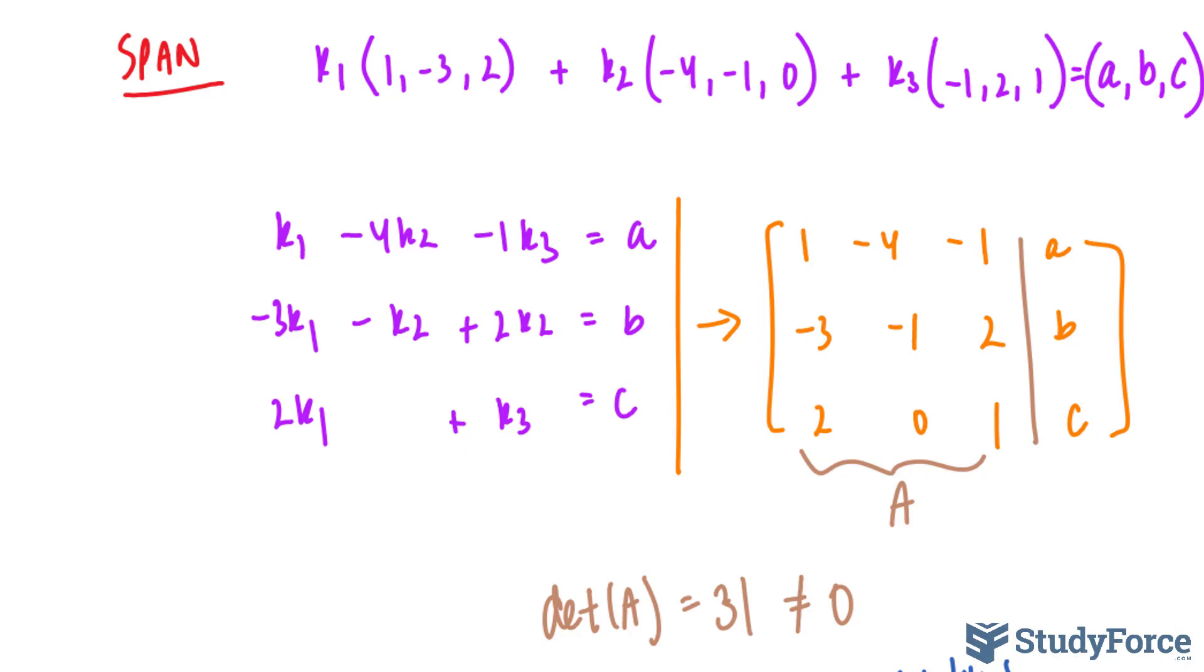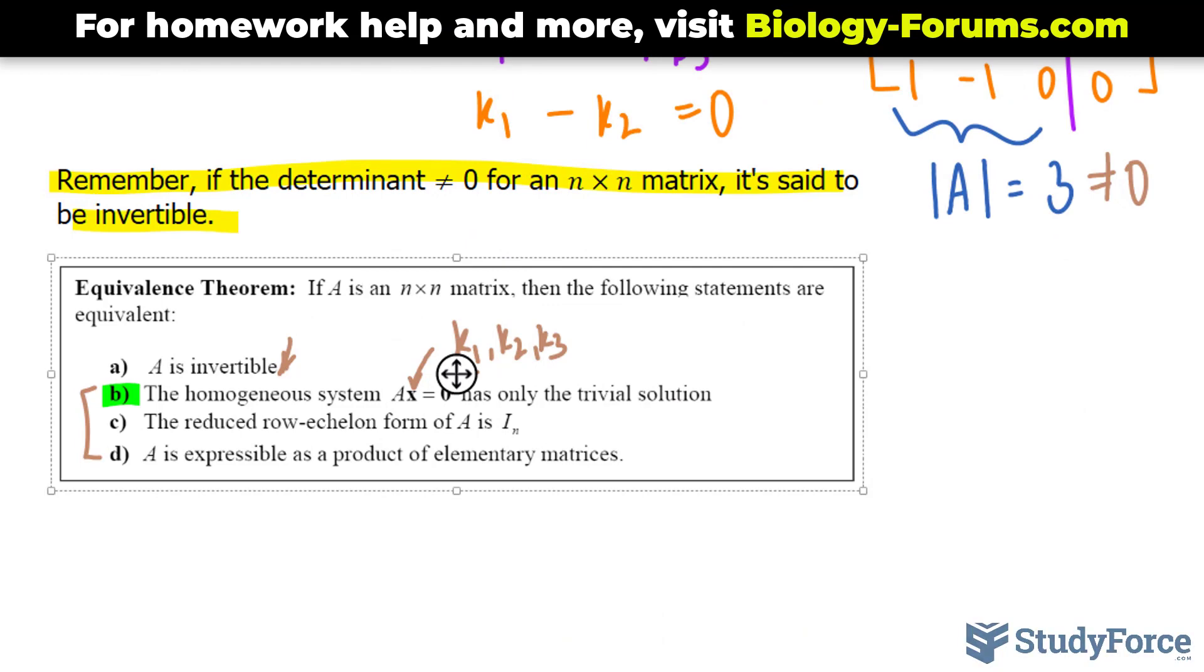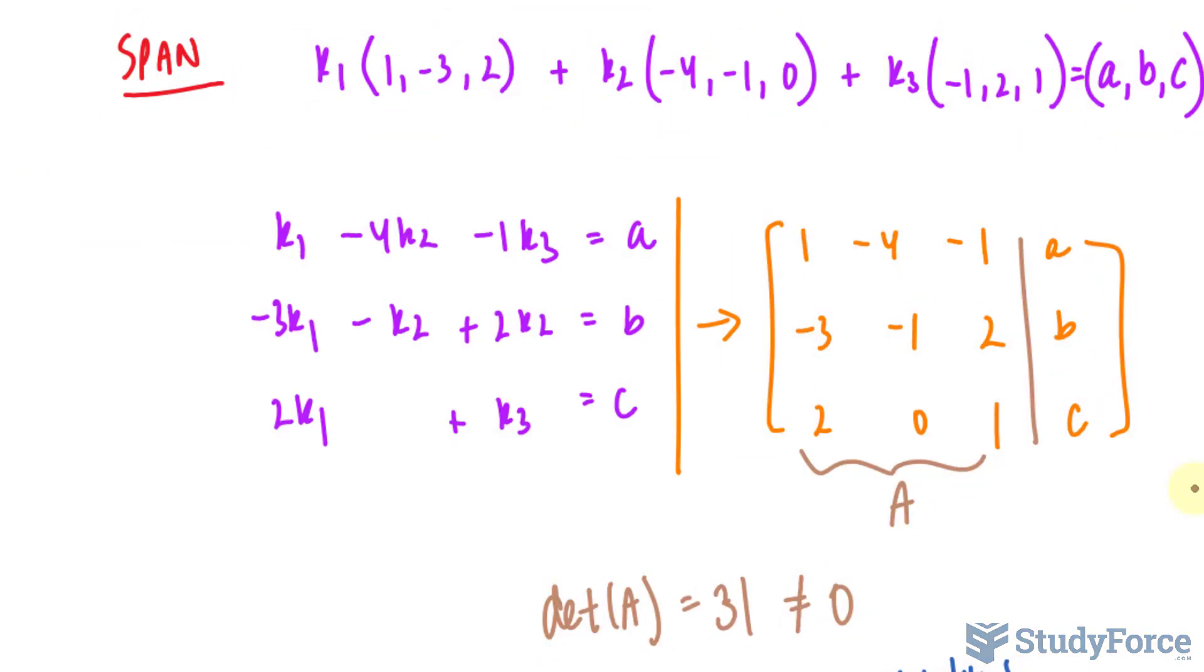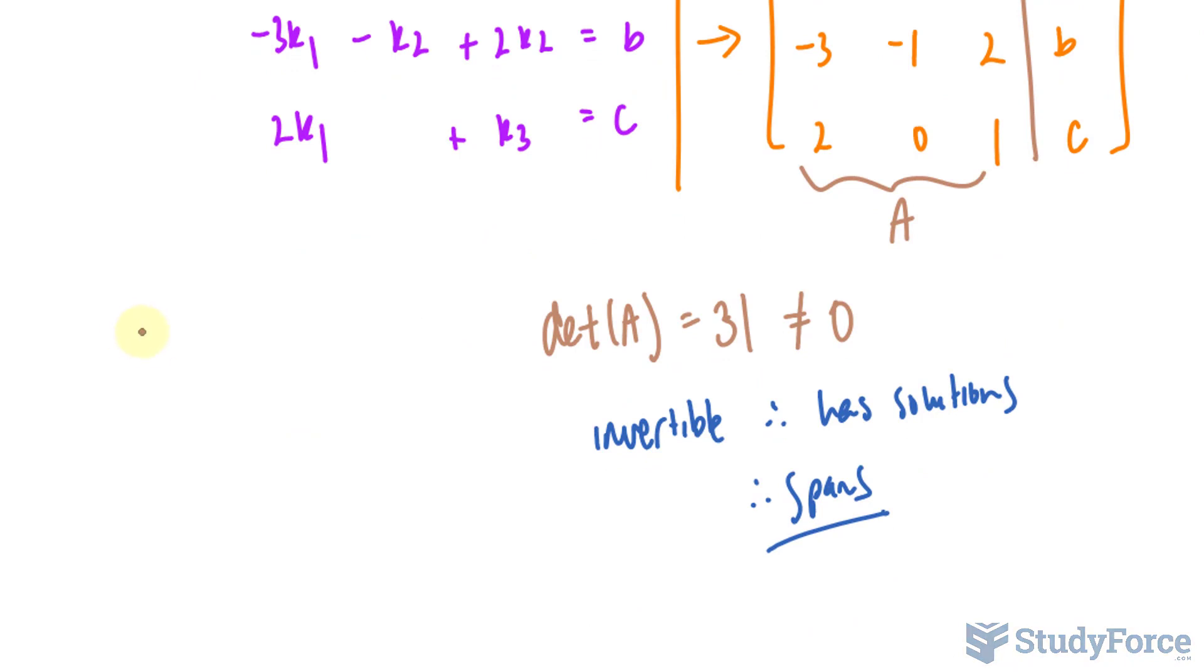Remember what we learned in one of our previous videos. We learned that if the determinant is not equal to 0, as in our case here, for an n-by-n matrix, it is said to be an invertible matrix. And according to the equivalence theorem, if a matrix is invertible, then the homogeneous system only has trivial solutions. That means k sub 1 through sub 3 equal to 0. If that's the case, then it's linearly independent. So just from that proof alone, this will be linearly independent. And because it's both linearly independent and we've proven that it spans, then it forms a basis.